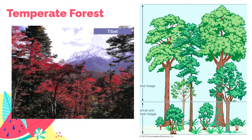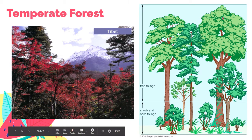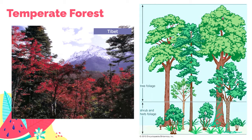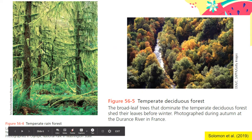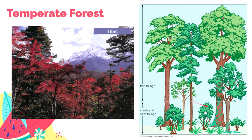This one is another temperate forest from Tibet. This diagram shows us the different types or categories of trees that can grow in temperate forest. In this type of biome, trees can grow very, very tall, and they are the ones that provide the foliage or coverage of leaves on top of the forest. And then you have smaller shrubs and smaller herb foliage that are found mostly at the bottom of the forest.